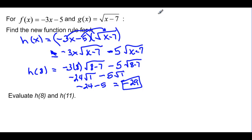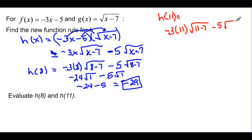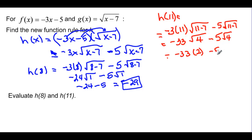Now h of 11: negative 3 times 11 times the square root of 11 minus 7, minus 5 times the square root of 11 minus 7. This is negative 33 times the square root of 4, minus 5 times the square root of 4. So negative 33 times 2 is negative 66, minus 5 times 2 is minus 10, giving us negative 76.